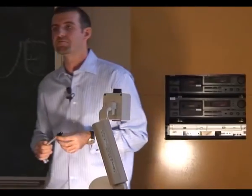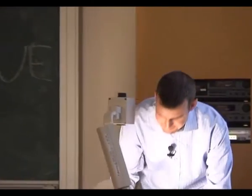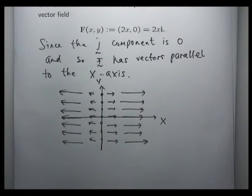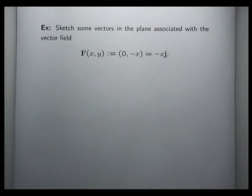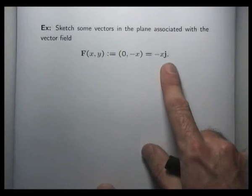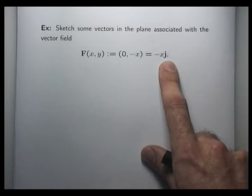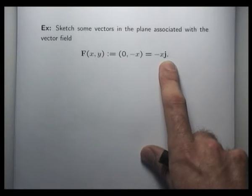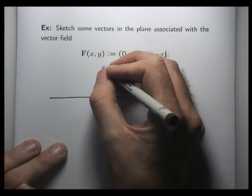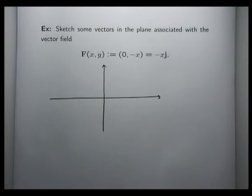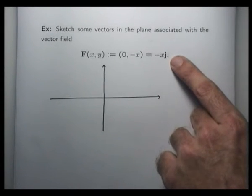If you spend a little bit of time on drawing these you can get a more precise set of vectors. Here we're asked to sketch the vectors in the plane associated with the following vector field — very similar to the previous example. Here we've only got a j component; the i component is zero. As x increases, the magnitude of f will also increase. As x decreases, the magnitude of f will decrease. We just need to be careful about whether x is positive or negative.